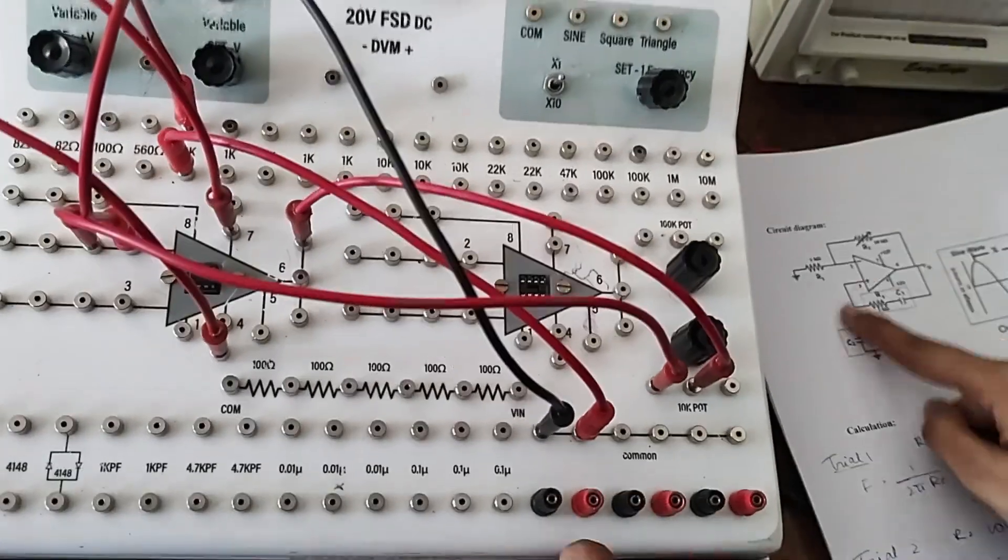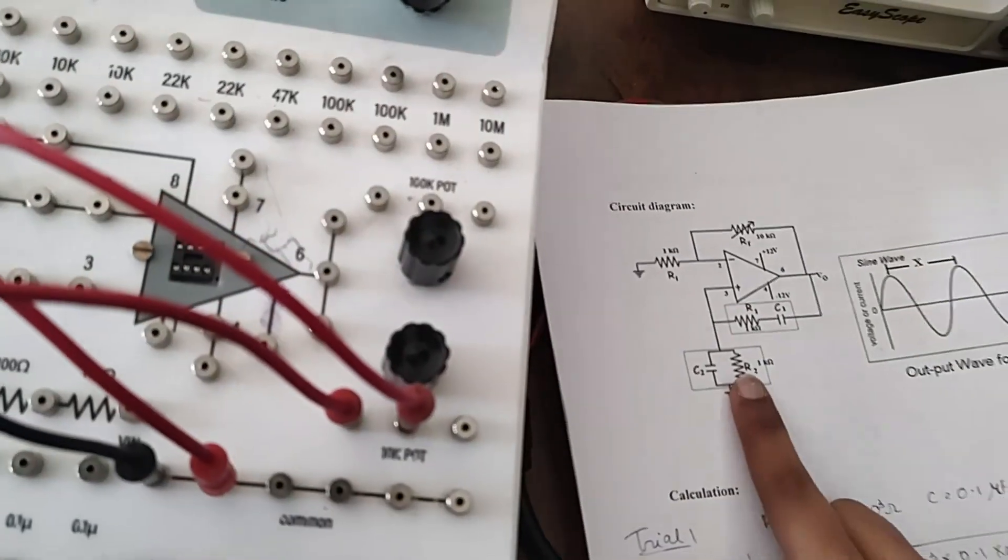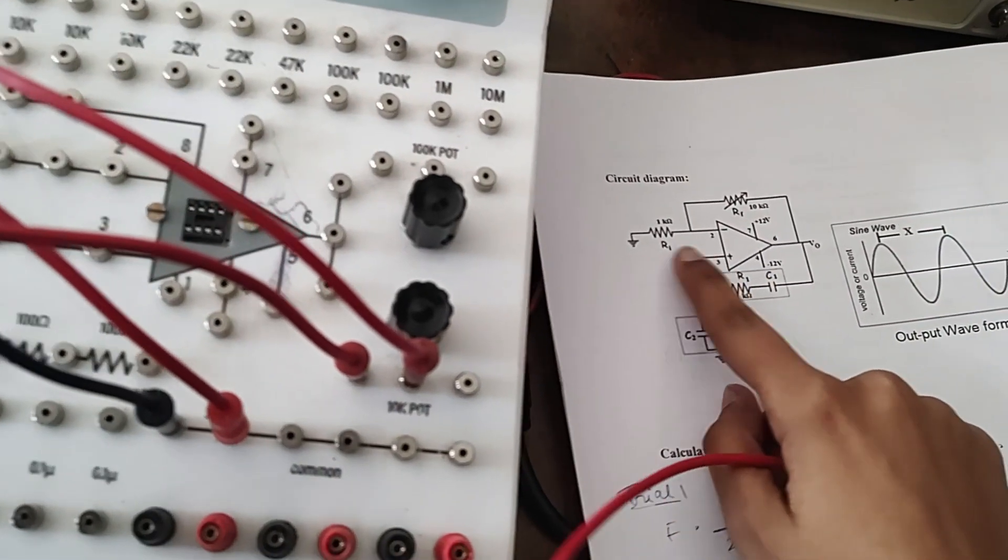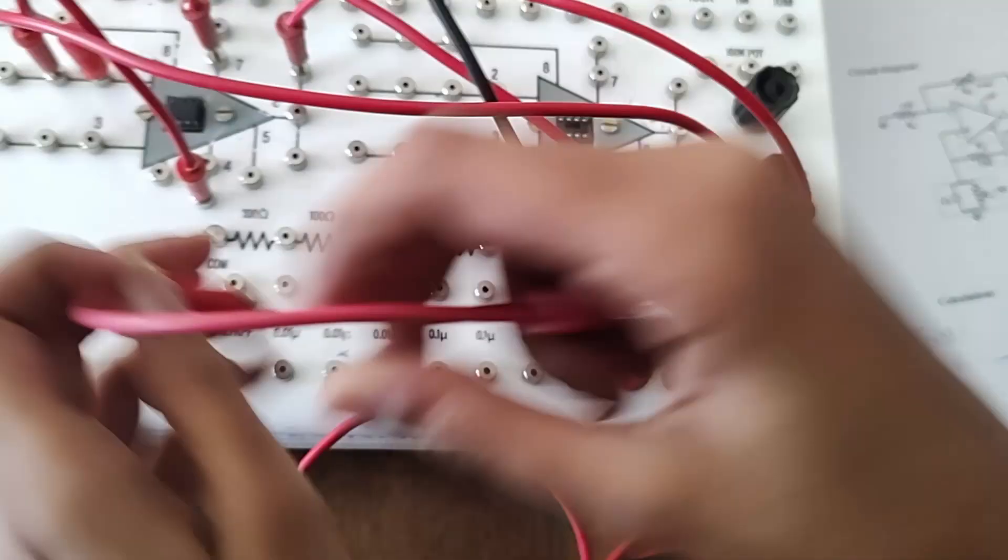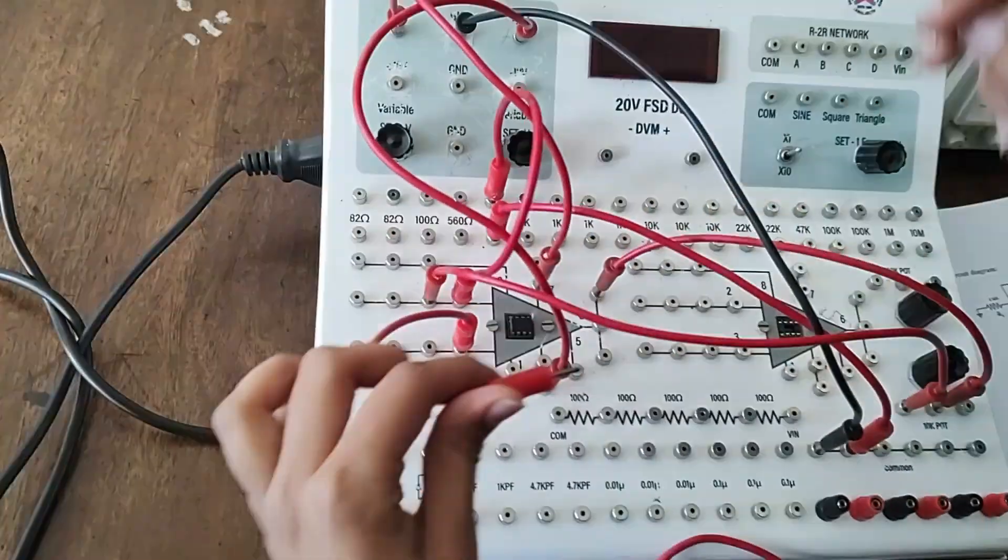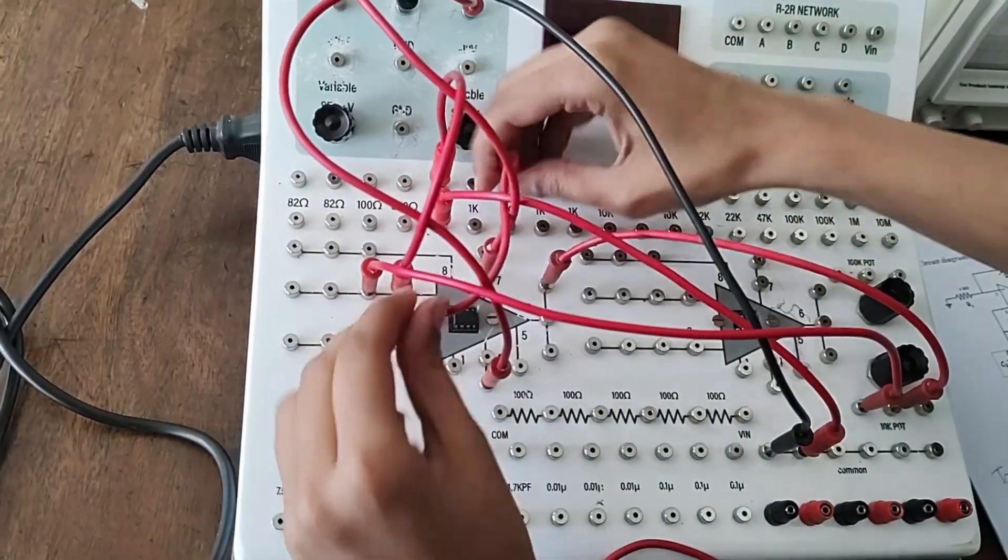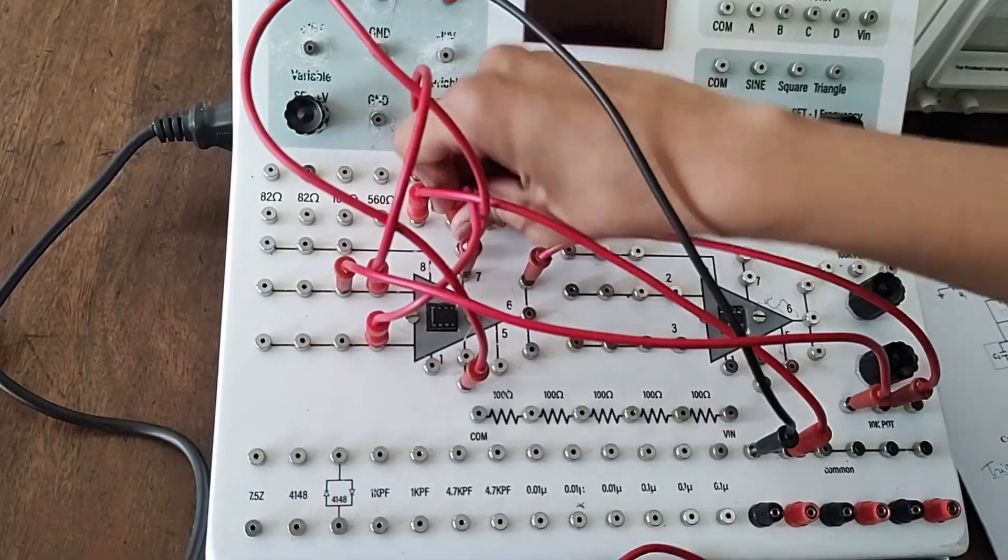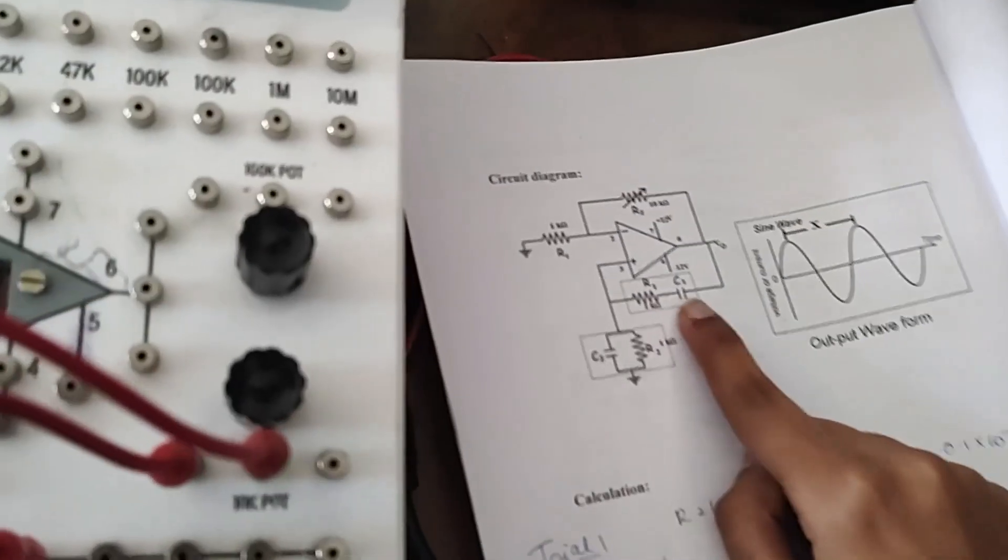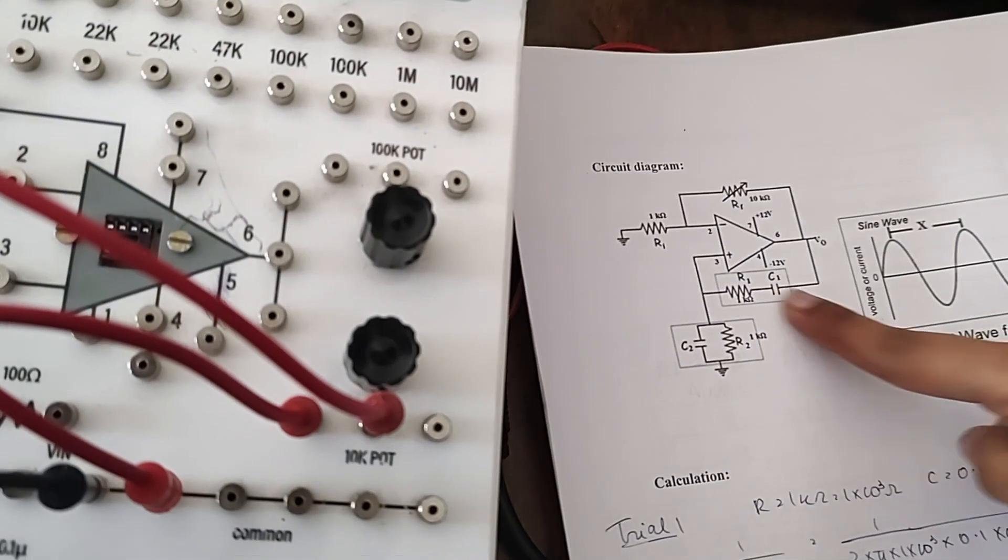Now let's do the resistors and capacitors connection. From 3 we have a 1k resistor. So 3 to 1k. From the other end of 1k we're going to capacitor.